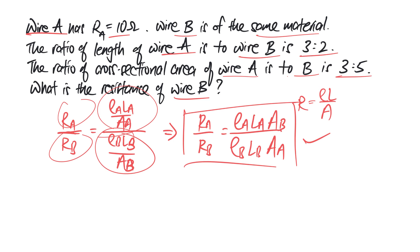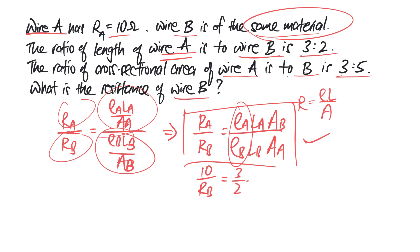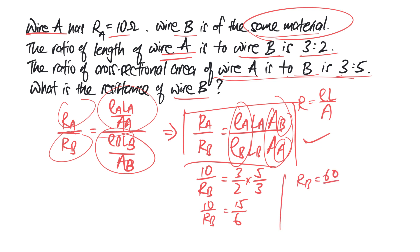Now let's continue to solve. With this, it will actually be very easy to find resistance B. Given that resistance of A is 10 ohms and resistance of B is what you want to find. Because they are of the same material, the resistivity ratio is 1 to 1 — they cancel off. For the length, wire A to wire B is 3 to 2, so it's 3 over 2. And for the cross-sectional area, the question gives A to B as 3 to 5, but in the formula it's B over A, so it must be 5 over 3. So 10 over resistance B equals 15 over 6, therefore resistance B equals 60 over 15, giving the answer 4.0 ohms.